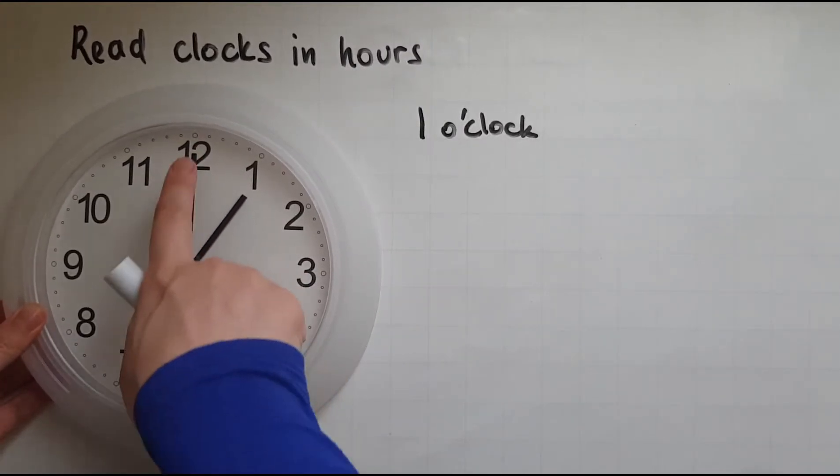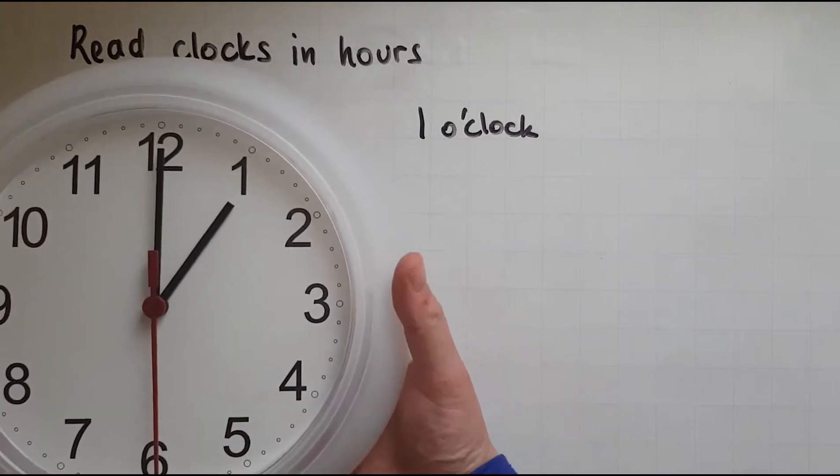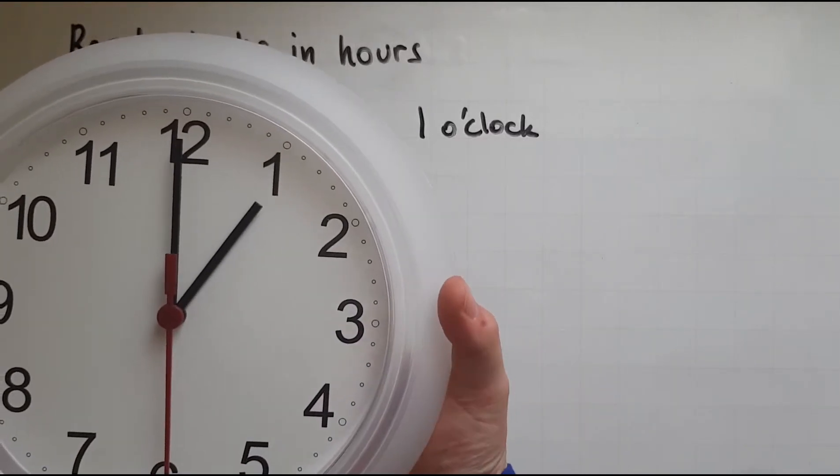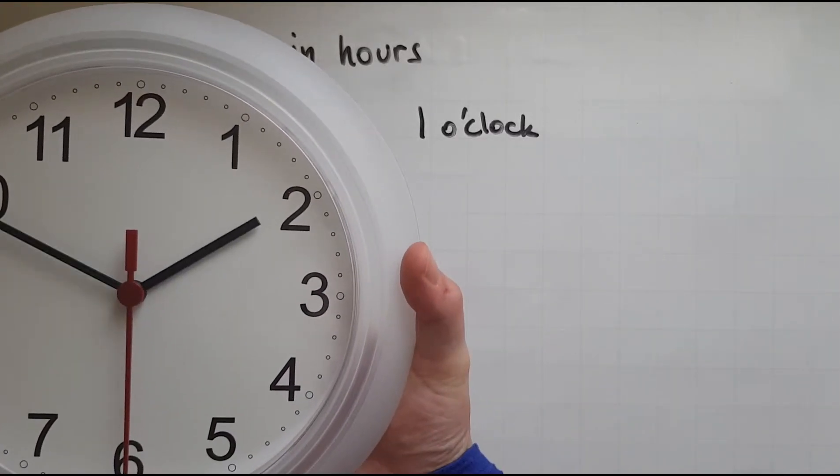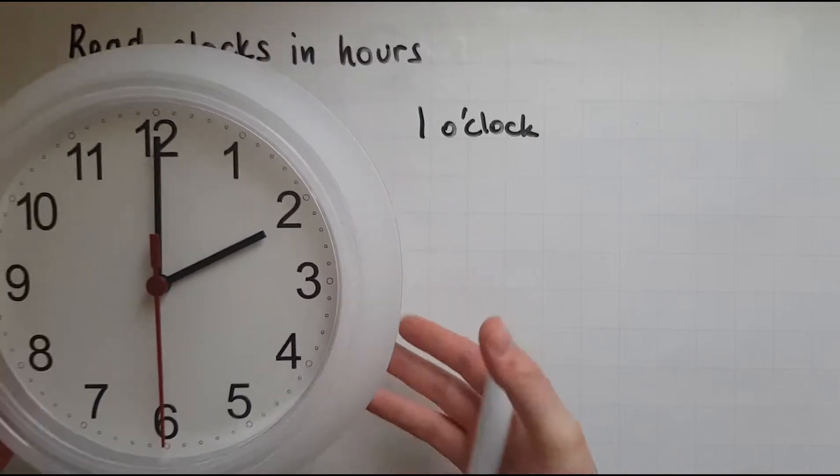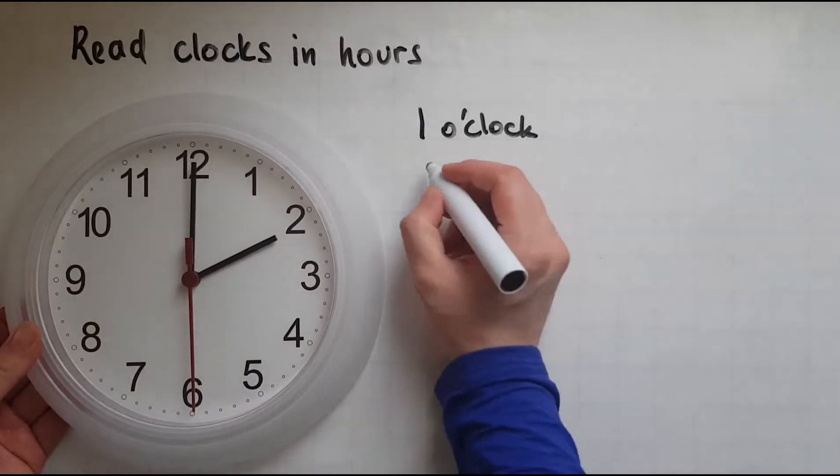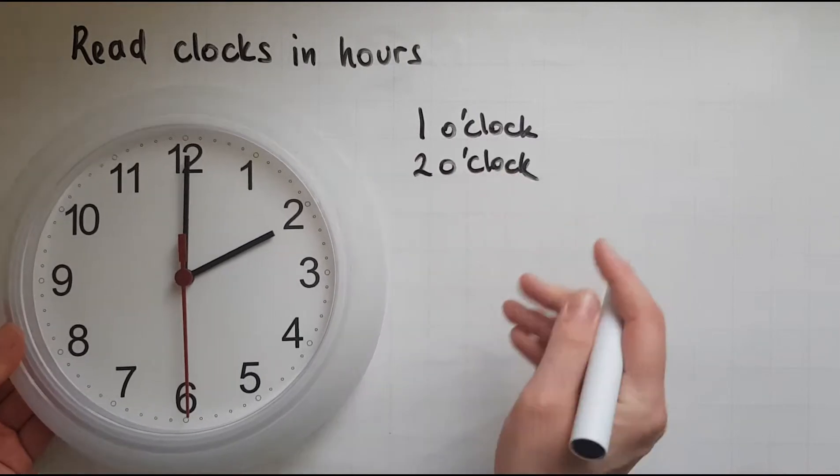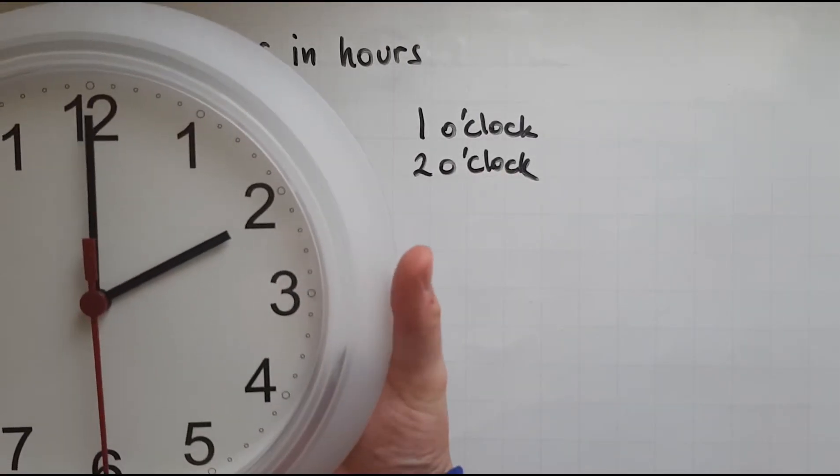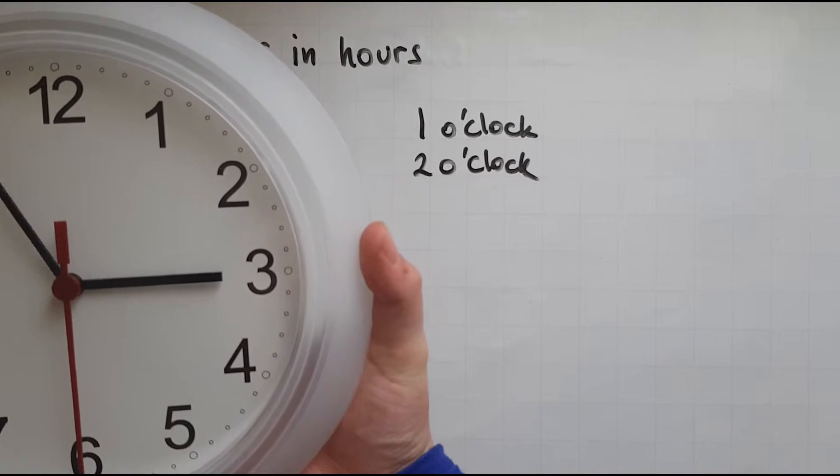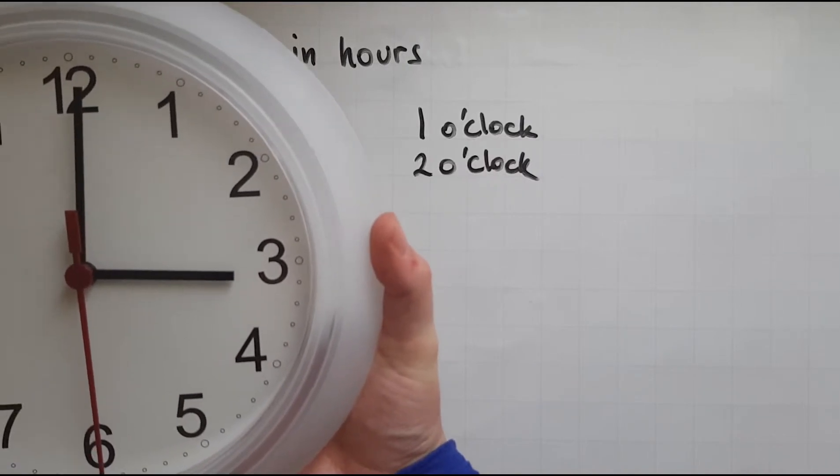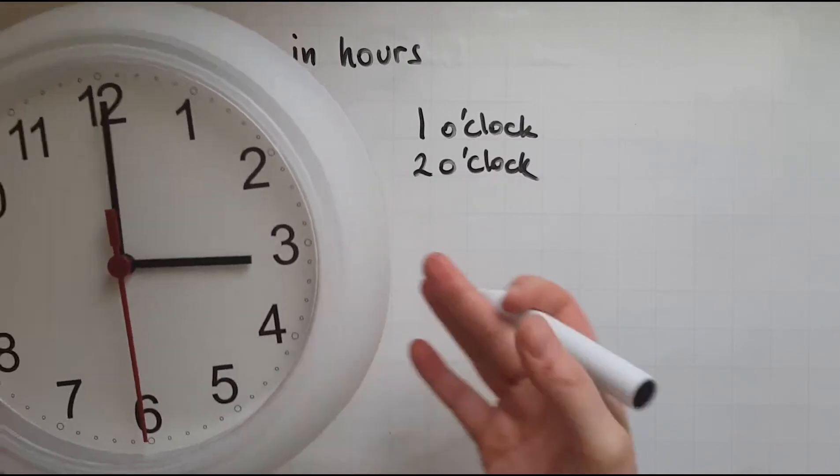and the minutes hand is on 12. Let's see, now let's make two o'clock. This is two o'clock. This now is going to be three, three o'clock.